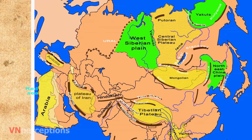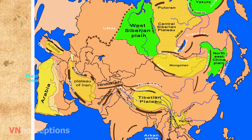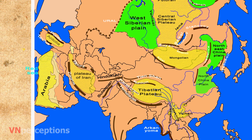It is China's largest plain with an elevation lower than 200 metres. Then there is the North China Plain, formed by the deposits of the Yellow River and Yangtze. It is the largest alluvial plain of China, bordered to the north by the Yanshan Mountains, to the west by the Taihang Mountains, to the south by the Dabie and Tianmu Mountains, and to the east by the Yellow Sea. The Yellow River flows through the middle of the plain into the Bohai Sea. Next is the Mesopotamian Plain, which lies in Iraq between the two rivers, the Tigris and Euphrates.